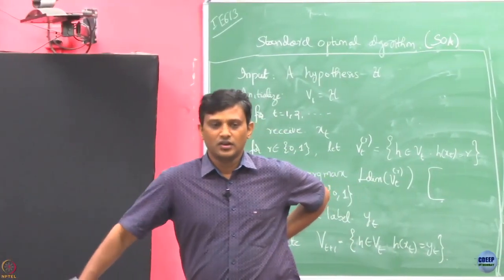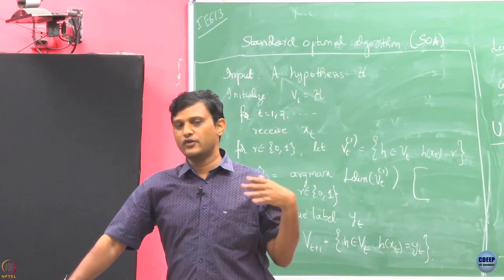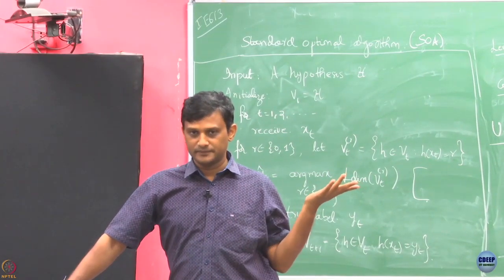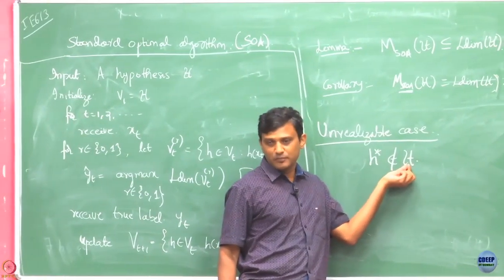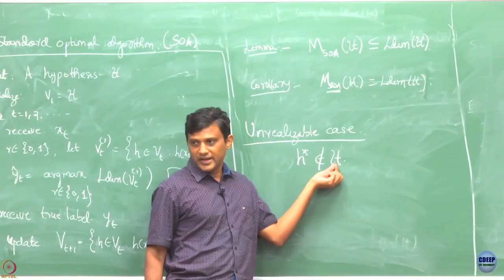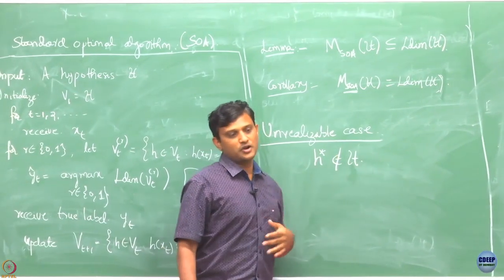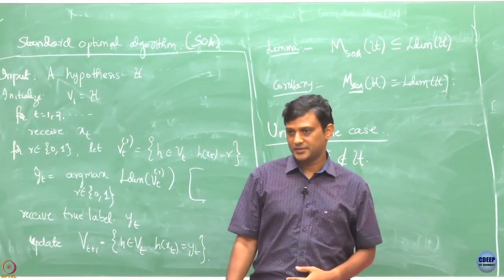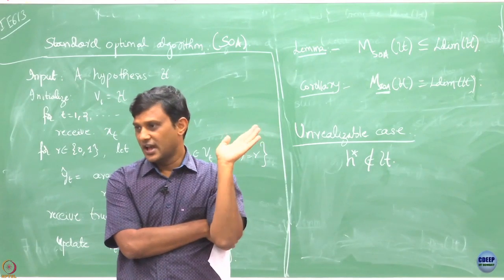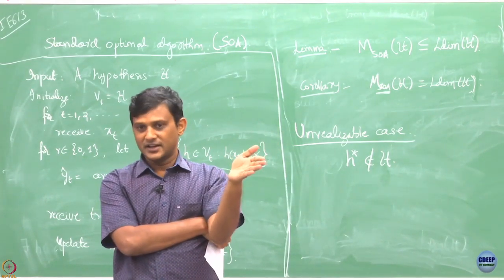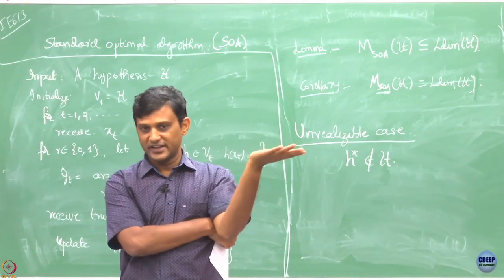In this case, the first question is how to set up our evaluation criteria. All I can use are hypotheses from my hypothesis class, but the true labels could be generated from a hypothesis outside it. Earlier, when H-star was included in H, I aimed to quickly identify it and always play it — if you can quickly identify it, you make no mistakes.